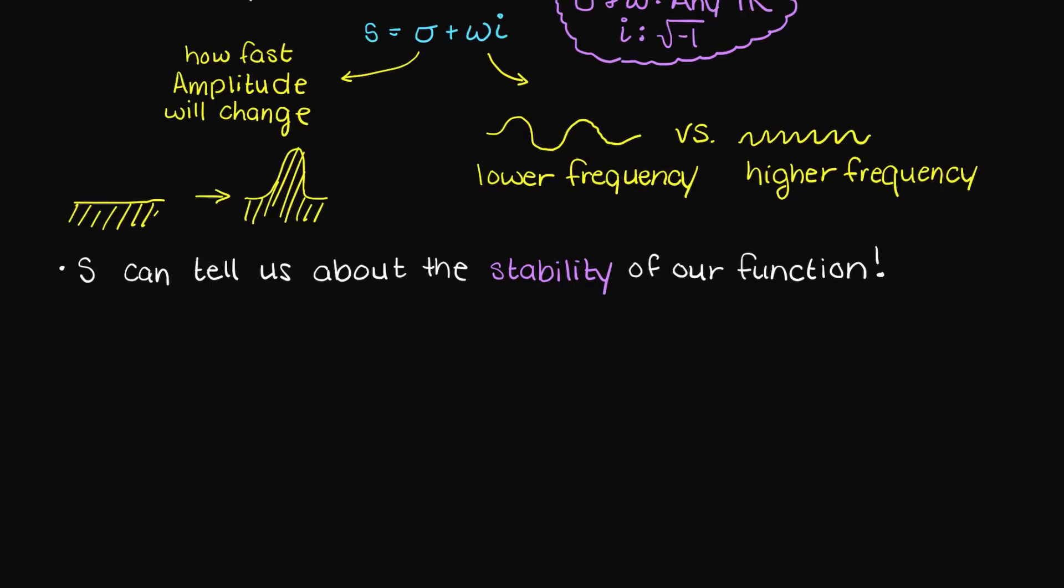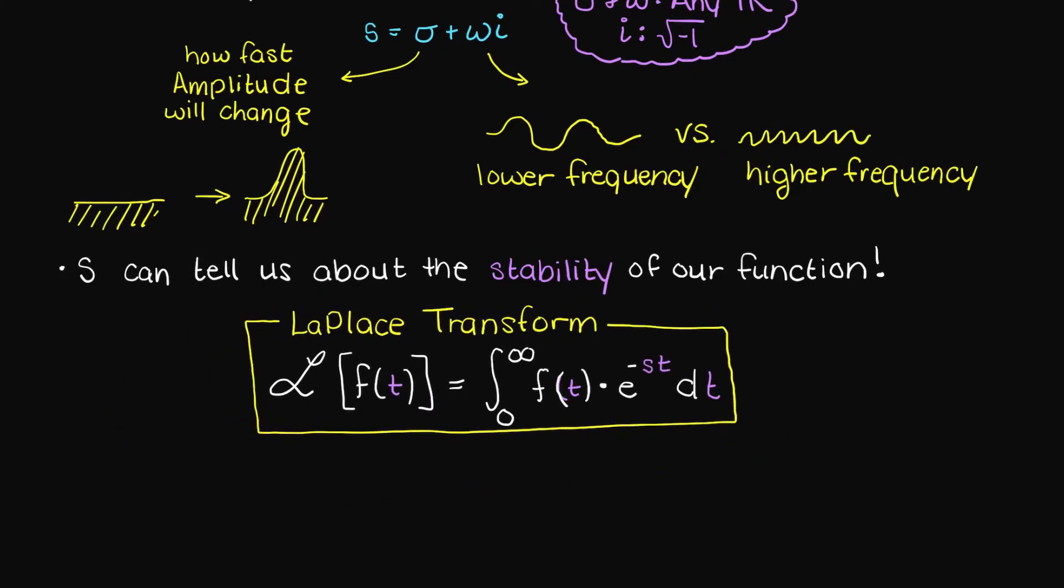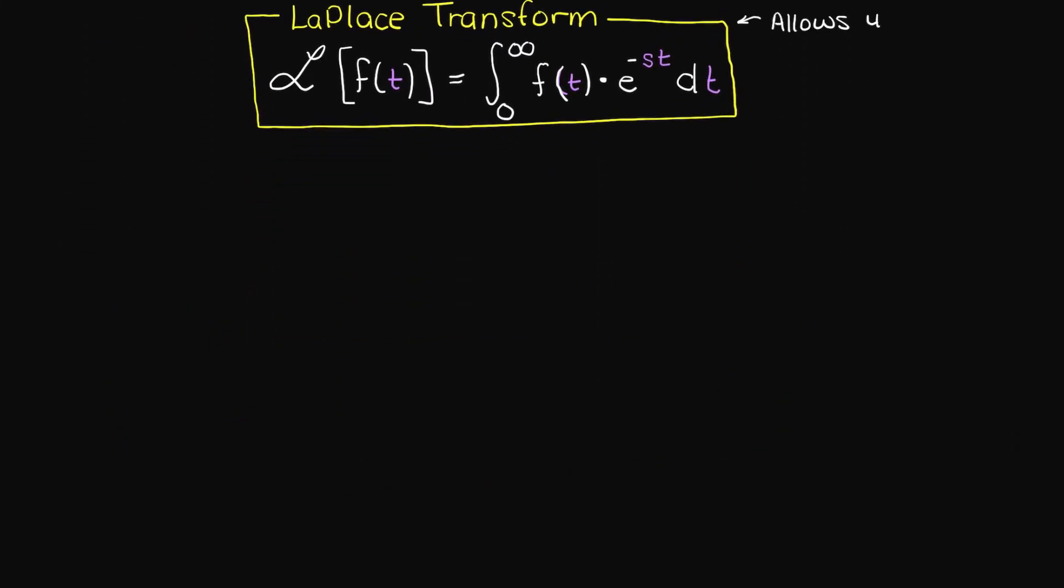The following is the general formula for taking the Laplace transform of a given time function. As you can see here, all we do is take the integral from zero time to infinite time, and multiply our time function by Euler's constant to the power of negative s, remember that is our complex variable, times t. The purpose of converting to the complex domain, as we stated earlier, is so that we can solve the problem algebraically and then convert back to the time domain. This just makes our lives so much easier in solving these types of problems.